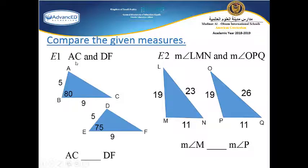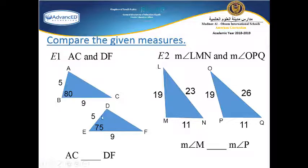Let's compare the given measures: AC and DF. Since AC is the third side of a triangle with two sides of length 5 and 9, congruent to the two sides of the second triangle (also 5 and 9), the included angle here is 80° and the other is 75°. The side AC opposite to the larger angle 80° is bigger than side DF opposite to angle 75°.